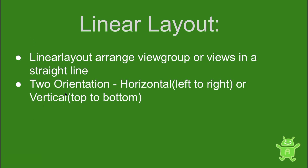For example, consider that we have two buttons in our app — first one is 'Add to Cart' and the second one is 'Buy Now'. We want them arranged from left to right, where the first half will be 'Add to Cart' and the second half will be 'Buy Now'. In that case you can use horizontal orientation to arrange the buttons from left to right.